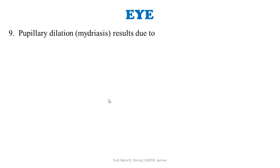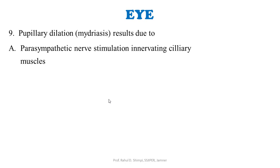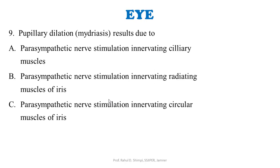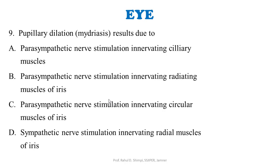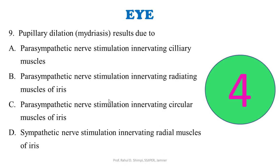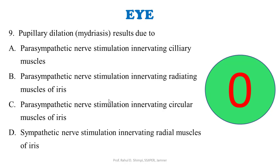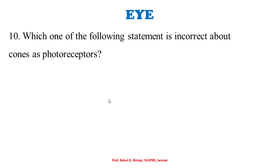Pupillary dilation, that is mydriasis, results due to: A: parasympathetic nerve stimulation innervating ciliary muscles. B: parasympathetic nerve stimulation innervating radial muscles of iris. C: parasympathetic nerve stimulation innervating circular muscles of iris. D: sympathetic nerve stimulation innervating radial muscles of iris. The correct answer is option D. Sympathetic nerve stimulation reaches the radial muscles of the iris, causing their contraction, which increases pupillary dimensions — known as mydriasis.